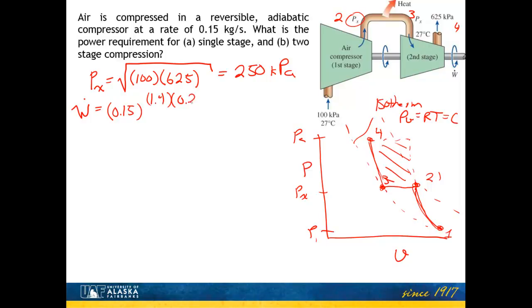And this ratio of krt: 1.4, 0.287, and 300, all over 0.4. That's k minus 1. And now I have the ratio over the pressure. And I'm just doing the first stage here. So this will be 250 over 100, so it's P sub X over P1 to the 0.4 over 1.4. Subtract 1 from that. And then I'm just going to go ahead and multiply all of that by 2, and that will give me the total work requirement.